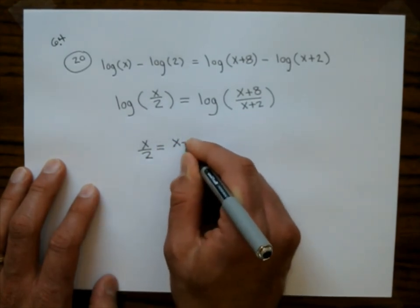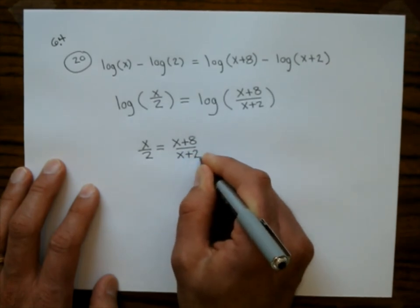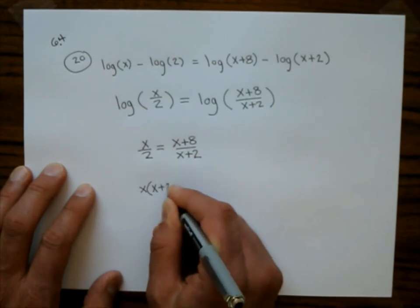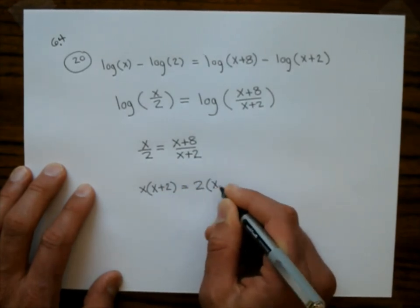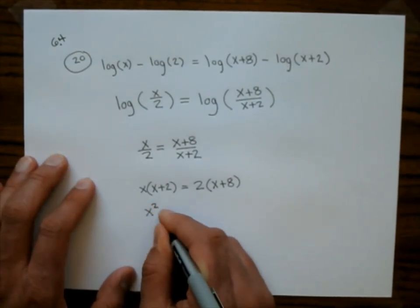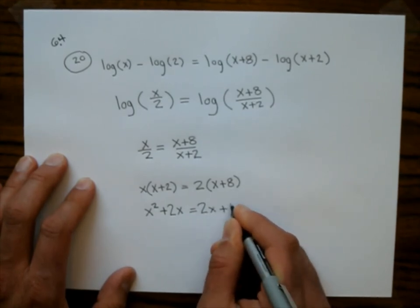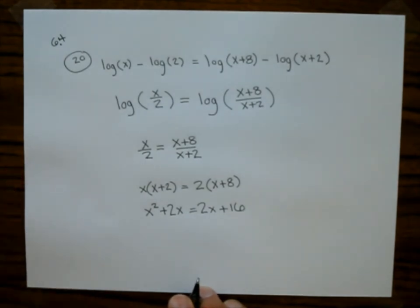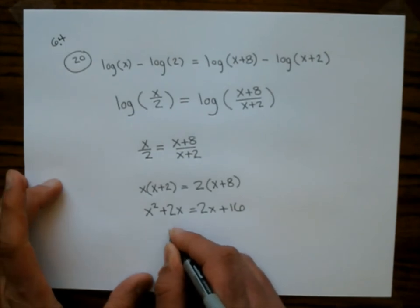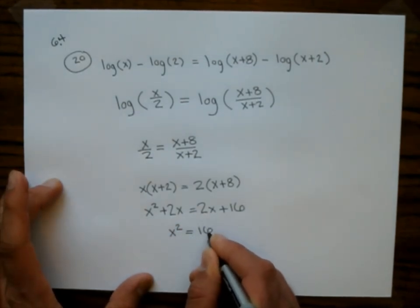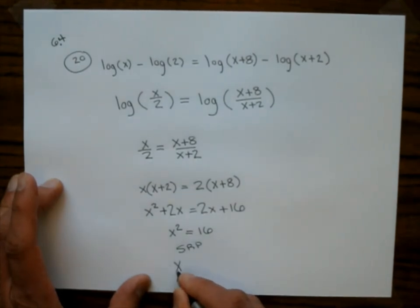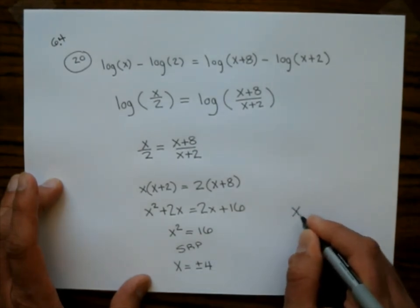Now I have log of this equals log of that with the same base, so by the one-to-one property of logarithms I set the arguments equal: x/2 equals (x plus 8)/(x plus 2). Cross-multiplying gives x(x plus 2) equals 2(x plus 8). Distributing both sides: x squared plus 2x equals 2x plus 16.